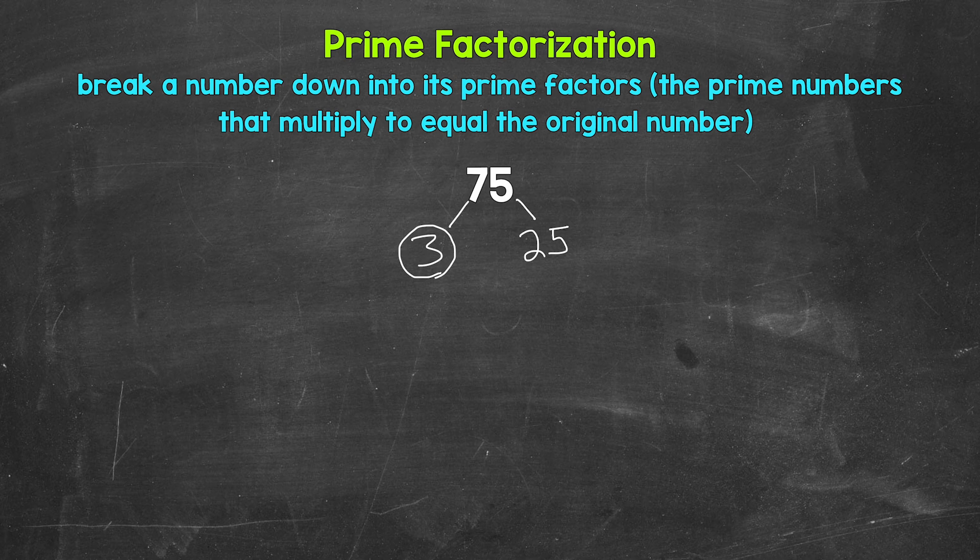25, on the other hand, is a composite number. We can break 25 down. So we need to think of factors. Well, five times five is 25. Five is a factor of 25. So let's break 25 down into five and five.